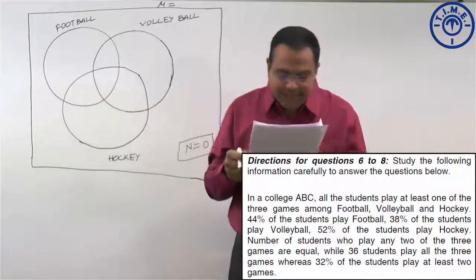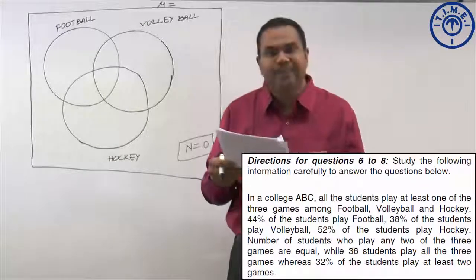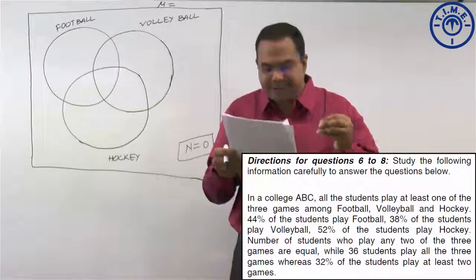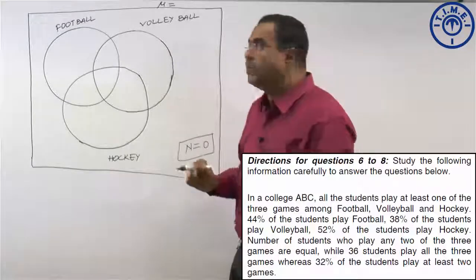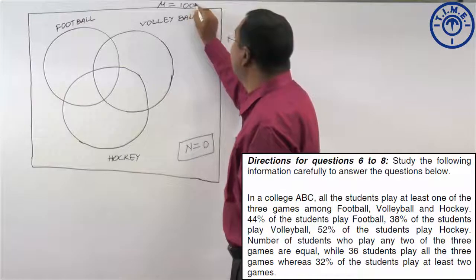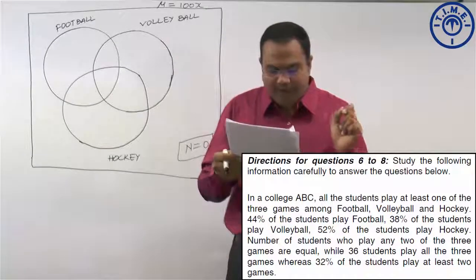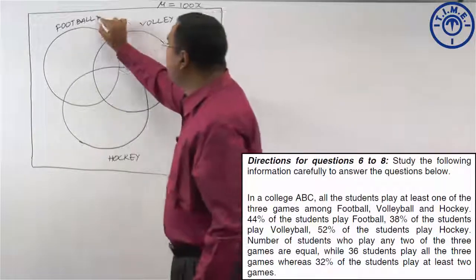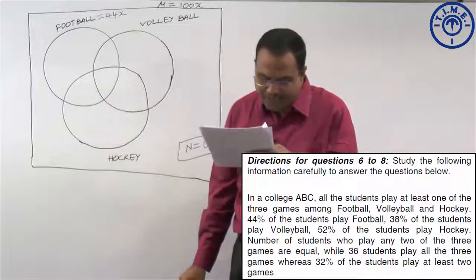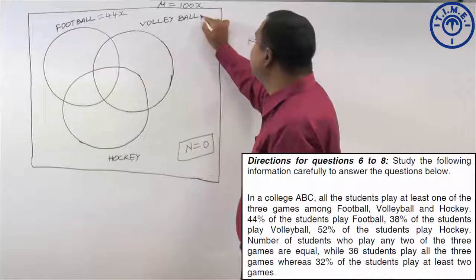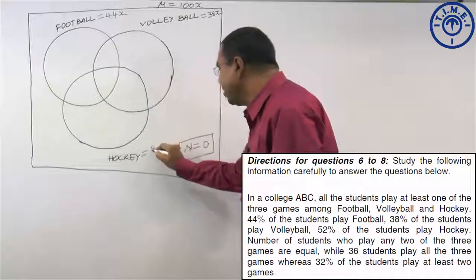44 percent of the students play football, 38 percent play volleyball and 52 percent play hockey. Since we do not have information about the total number of students and everything is given in terms of percentage, let us assume the total value mu is equal to 100X. So 44X are playing football, 38X play volleyball and 52X play hockey.